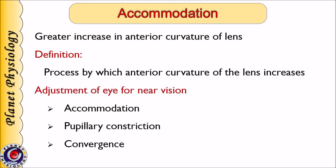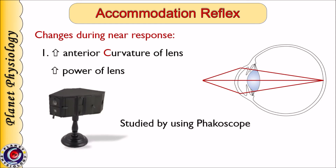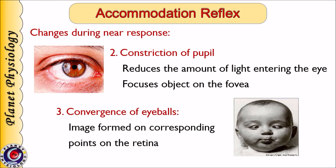During adjustment of the eye for near vision, the eye shows accommodation, pupillary constriction, as well as convergence of the eyeball. This three-part response is called the near response. The first change is increase in anterior curvature of the lens, to increase the refractive power so that diverging rays are focused exactly on the retina. The second change is constriction of the pupil, which helps reduce the amount of light entering the eye and focuses the object in the fovea region, improving clarity and depth of vision. The third change is convergence of the eyeball, so that the image is formed on corresponding points on the retina.